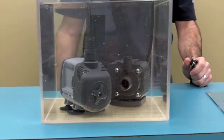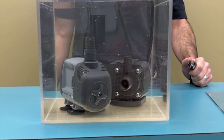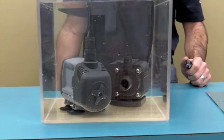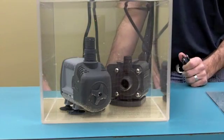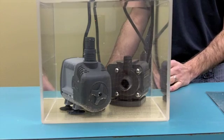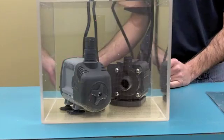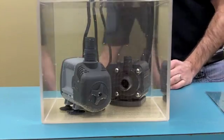This is a comparison of the Syncra 568 gallon per hour 2.0 compared to the mag 5. We're looking for noise so I'm going to put my hand in the tank and actually keep the water splashing noise down so we can get a comparison of the noise. I'm going to plug in the Syncra pump first.